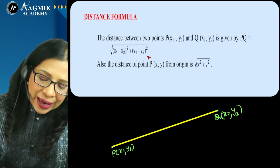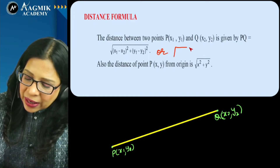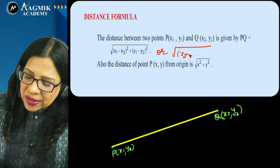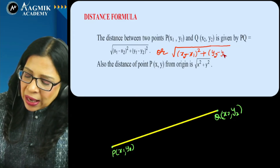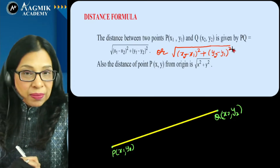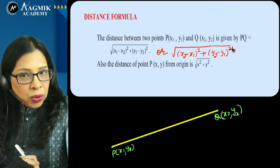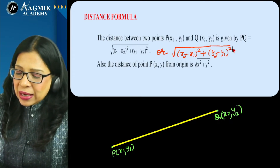You can even write it as under root of (x2 minus x1) whole square plus (y2 minus y1) whole square, simply because (a minus b) whole square is same as (b minus a) whole square. So you can use either form of the formula.